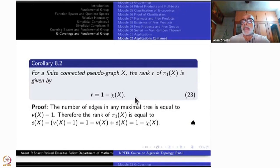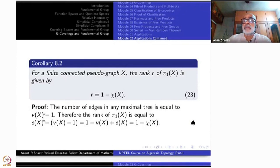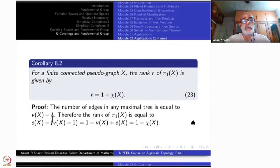This corollary is one line but very important and easy to remember. For a finite connected pseudograph, the rank R of the fundamental group is given by 1 minus χ(X).